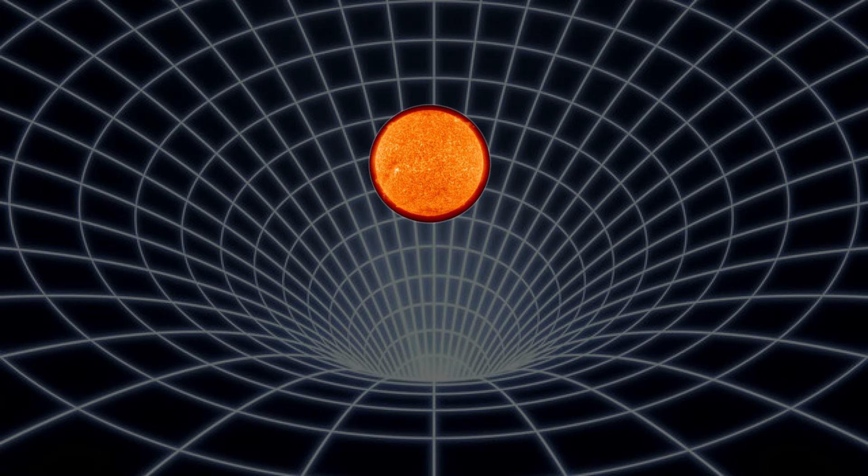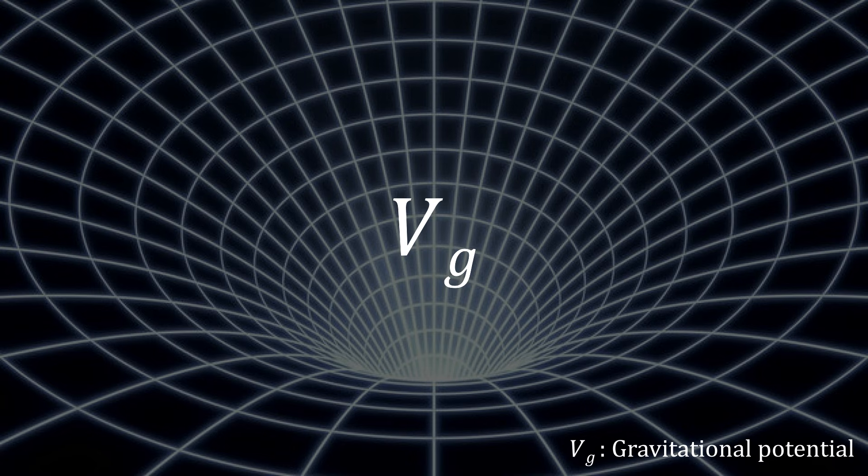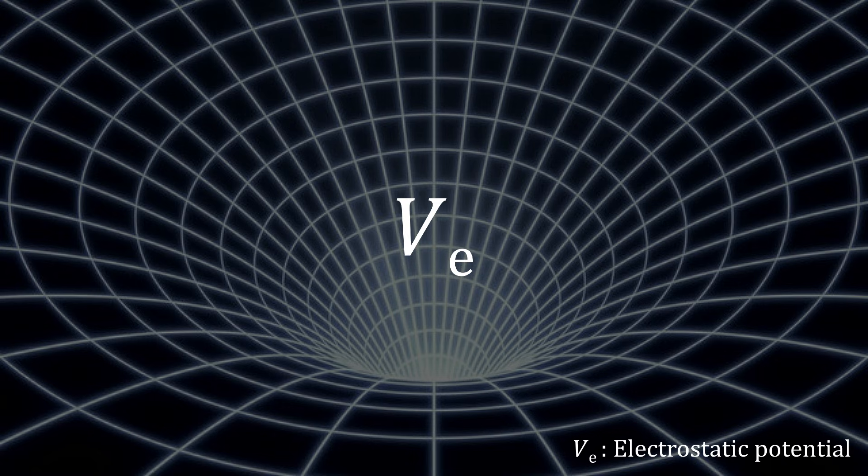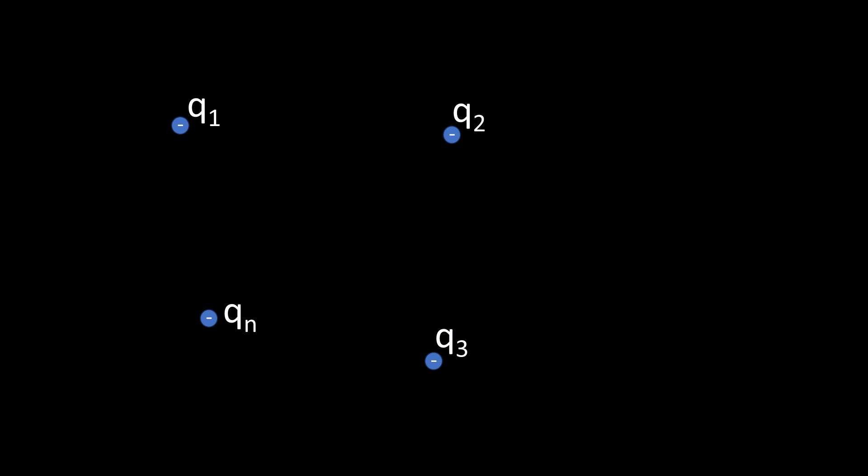Now, personally, it took me quite some time to realize that these images do not really visualize the curvature of space itself, but rather something that is called the gravitational potential. And gravitational potential is very similar to electrostatic potential, or a voltage, something that many of you will know from physics classes. So let me take electrostatic potential as a starting point for my explanation.